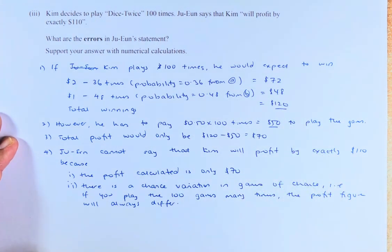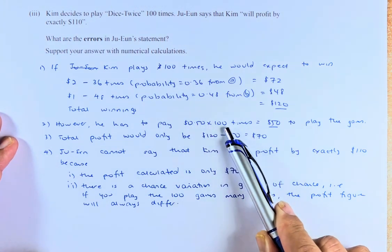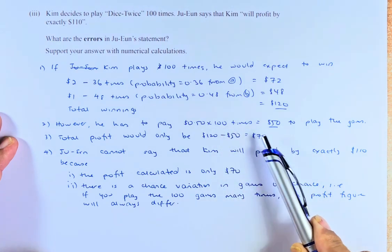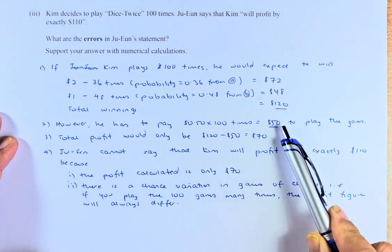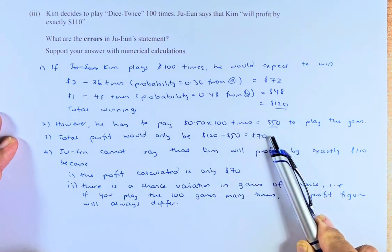But, on the other hand, when he plays each game, he has to pay 50 cents per game. So, he plays 100 times, so 50 cents times 100, that gives us $50. So, the total profit would not be 120, the total profit would only be 120 minus 50. That will give you a $70 profit.